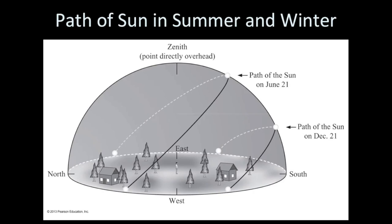Look at the path of the Sun on June 21st — that's the summer solstice, the day of the year with the greatest number of hours of daylight. The Sun will spend the most amount of time above the horizon on that day. The Sun at sunrise on June 21st is on the eastern horizon, but it's north of east. So on June 21st, the Sun rises north of east and sets north of west.